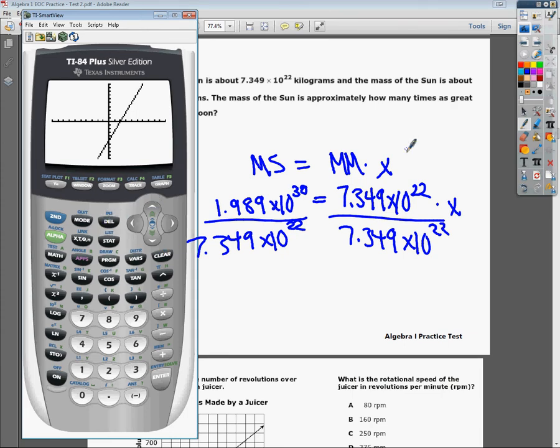This is my handy-dandy calculator. Let me clear out. I was working the last problem, obviously. Well, not obviously if you didn't do it, but it is what it is. Anyway, I'm going to put the first part in parentheses, so 1.989 times 10 to the 30th. Close parentheses. I like to have it in there. Easy to find.